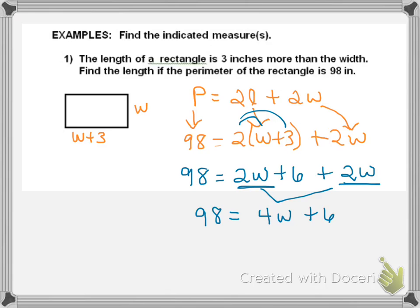98 equals 4W plus 6. Now, I put my brick wall up, subtract 6 from both sides. 4W on this side is what's left, so bring it down. On this side, I get 92.